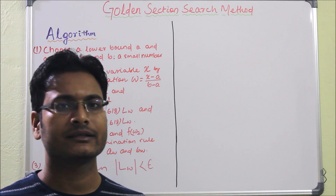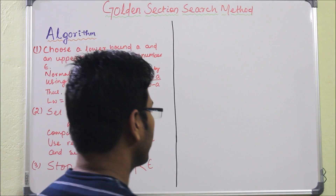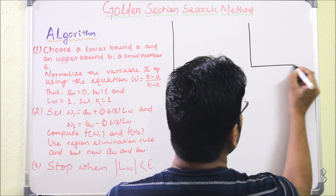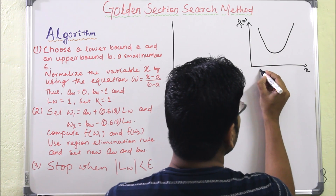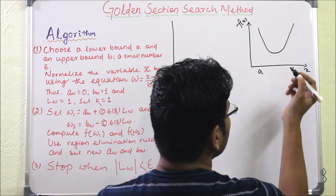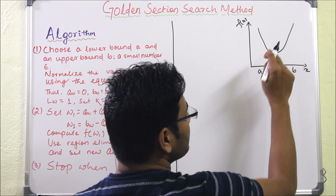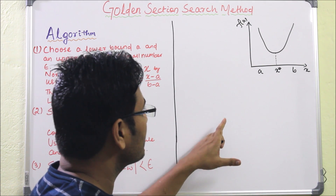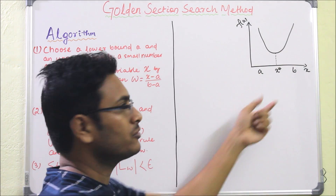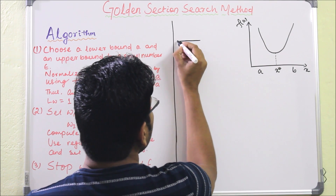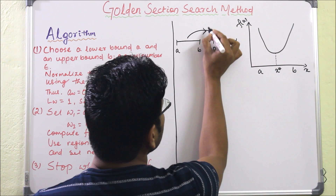Today we will see another region elimination method: the Golden Section Search method. Our aim is to find the minimum of a unimodal function f of x, where ab is the interval where the function is defined. We are finding x-star, the value at which the function value is minimum. In this method, we normalize the initial interval ab into 0 to 1.